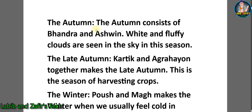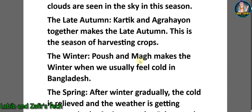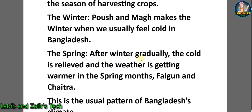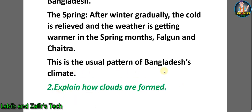The autumn consists of Bhadra and Ashwin; white and fluffy clouds are seen in the sky in this season. The late autumn: Kartik and Agrahayon together make the late autumn, which is the season of harvesting crops. The winter: Poush and Magh make the winter, when we usually feel cold in Bangladesh. The spring: after winter, the cold is gradually relieved and the weather gets warmer in the spring months of Falgun and Chaitra. This is the usual pattern of Bangladesh's climate.